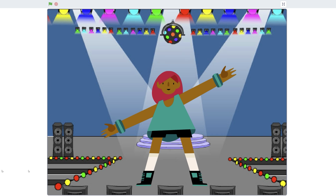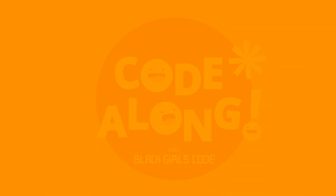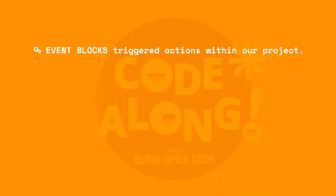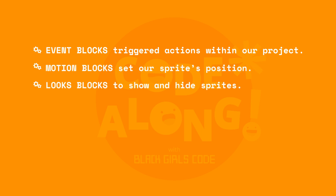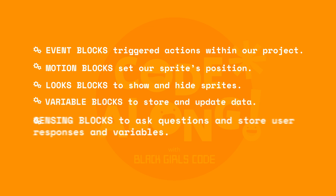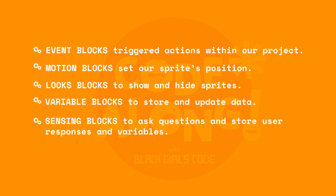Let's take a moment to celebrate everything we accomplished today. We used Event blocks to trigger actions in our project. We used Motion blocks to set a sprite's position. We used Looks blocks to show or hide sprites. We used Variable blocks to store and update data. And finally, we used Sensing blocks to ask questions and store users' responses in variables, making our projects truly interactive.